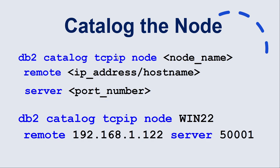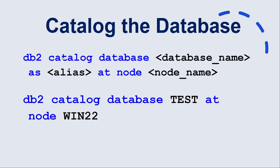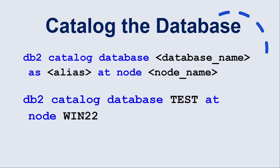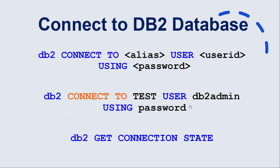Once the node is cataloged, go ahead and catalog the database using DB2 catalog database, giving the database name and optionally an alias, at the node name. The alias is optional — if you don't specify it, the database name becomes the alias. Then we are ready to connect using connect to, specifying the database name, user, and password. Using get connection state, we can verify that the connection is successful.